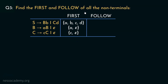We are done finding out all the firsts of all the non-terminals. Let's begin with the follows now. Coming to S, S doesn't really appear in any of the right-hand sides of any of the productions. Therefore, in follow of S, we are going to have the dollar symbol. Now coming to B, B appears in two instances of the production rules. In this case, the follow of B is the terminal symbol lowercase b. Therefore, in follow of B, we are going to have the terminal symbol b. Similarly, when we try to figure out the follow of C, C appears here and it is actually followed by the terminal symbol d. So in the follow of C, we are going to have the terminal symbol d. These are the first and the follows of all the non-terminals of this grammar.